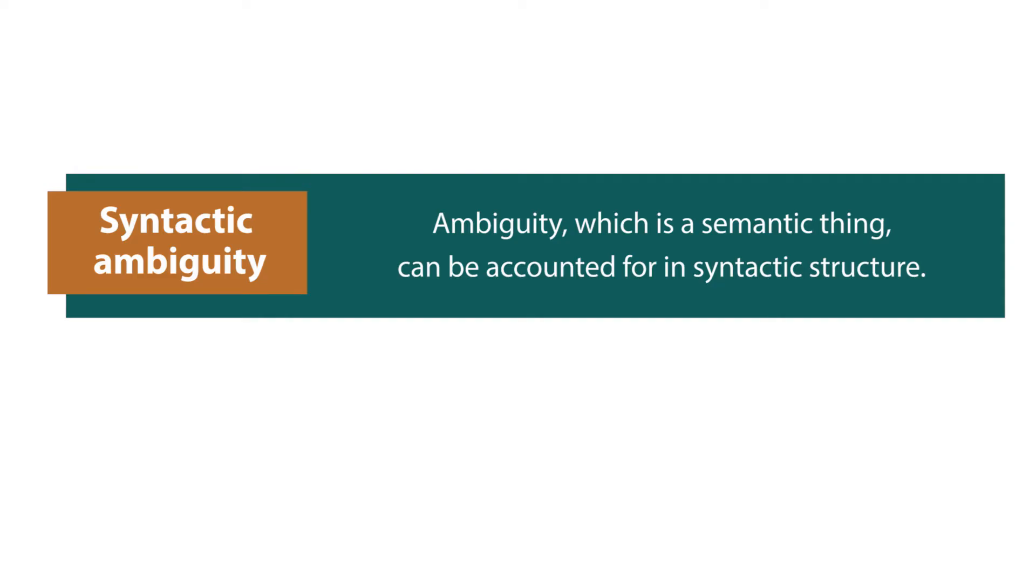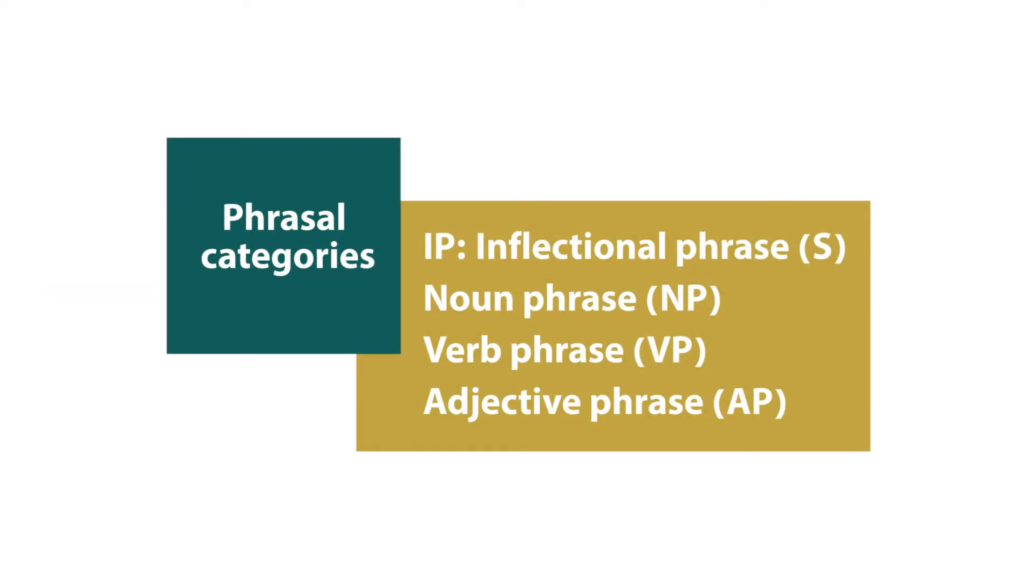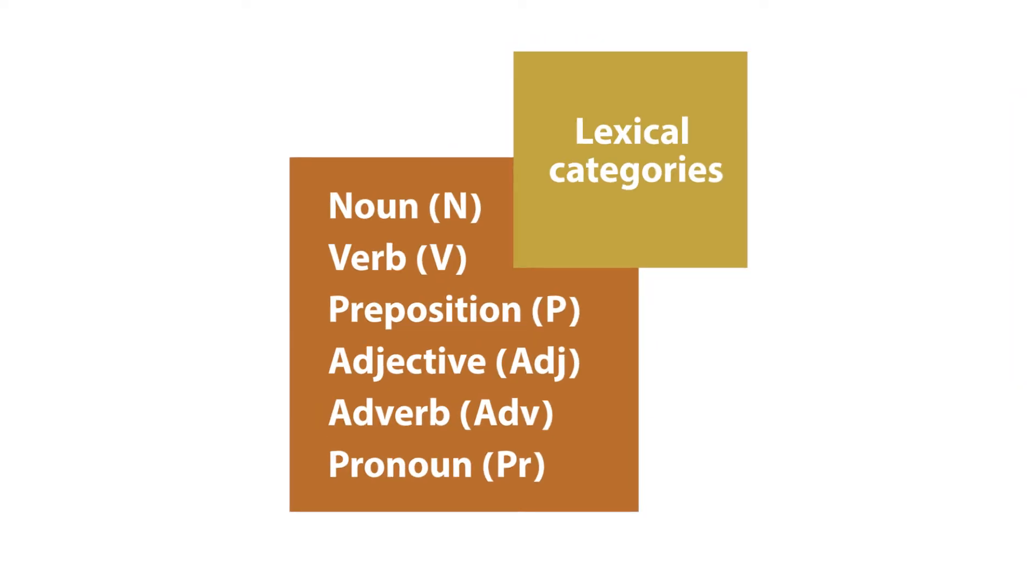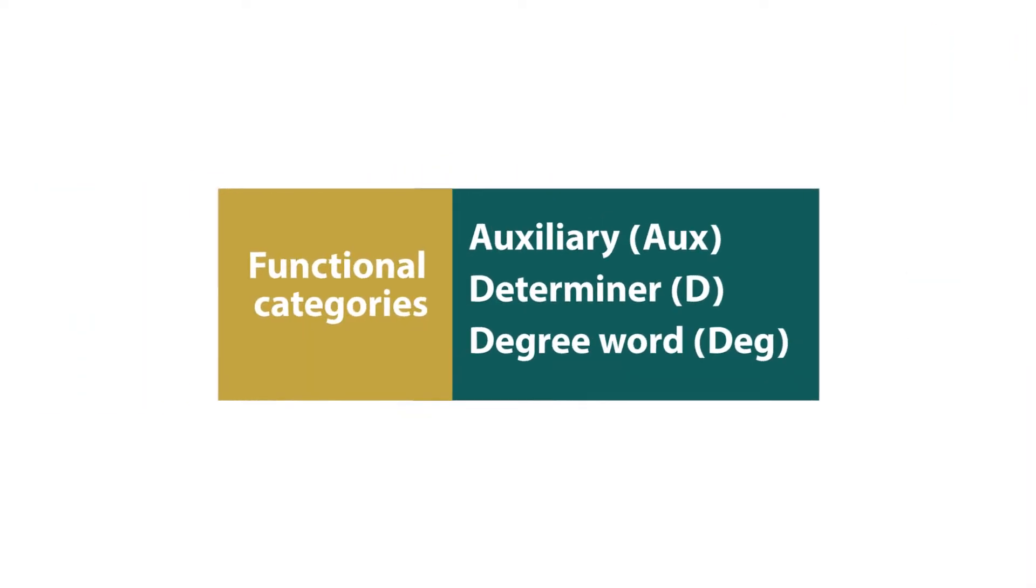Before we get there, you need to know that the phrases that we studied, as I told you in two videos ago, these are phrasal categories: noun phrase, verb phrase, adjective phrase, even inflectional phrase, sentence. They are phrasal categories. But we have lexical categories which are like noun, verb. We also have functional categories like determiner or auxiliary or auxiliary verb.